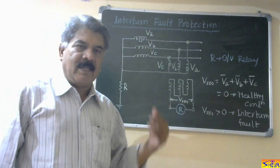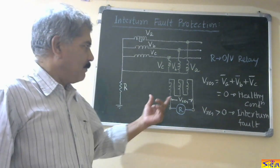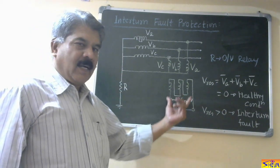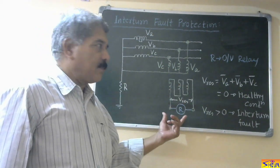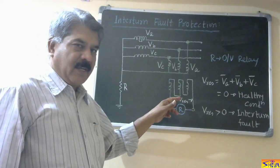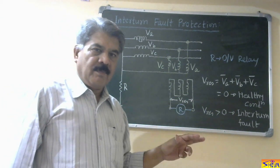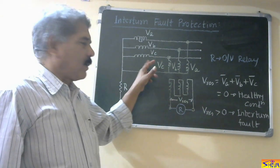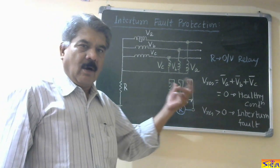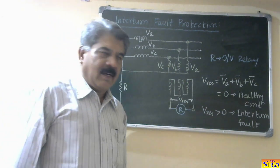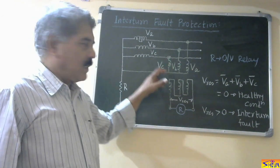We have to use a separate scheme. First, I will discuss the scheme with open delta secondary of a potential transformer. This type of protection against inter-turn faults is used depending on the number of layers in the winding. It can be single-layer or double-layer winding. In the present case, I have shown a single-layer winding for the generator.